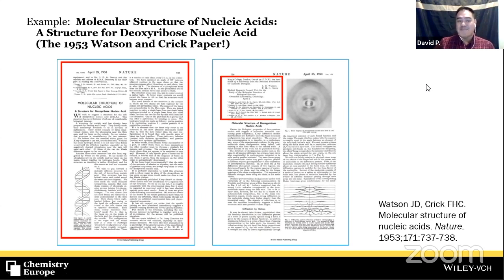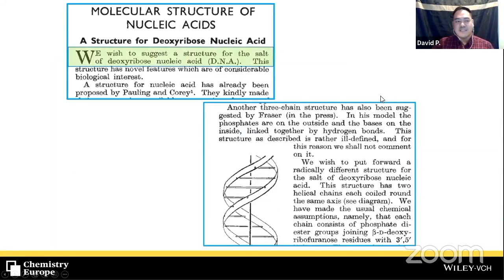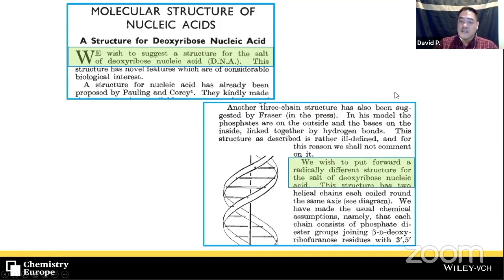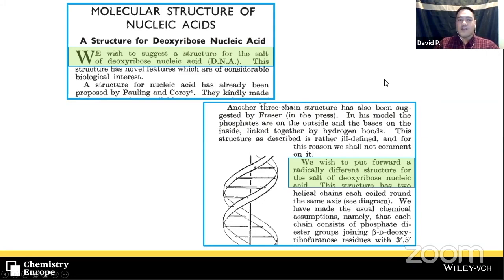A perfect example is the 1953 Watson and Crick paper from Nature — go read it if you haven't. It's about a page long and open access. In that crucial paper from the 50s, the first sentence reads: 'We wish to suggest a structure for the salt of the deoxyribose nucleic acid, DNA.' And later: 'We wish to put forward a radically different structure...' So it wasn't the case that in earlier decades everyone only wrote in the passive form. Good science writing has always existed.